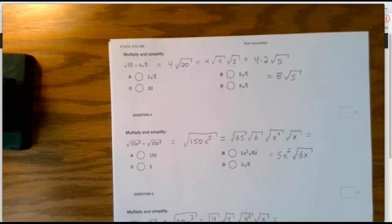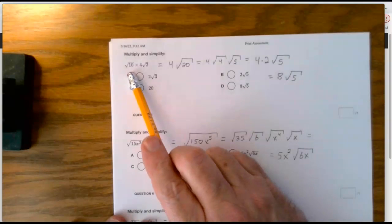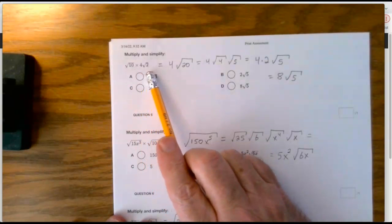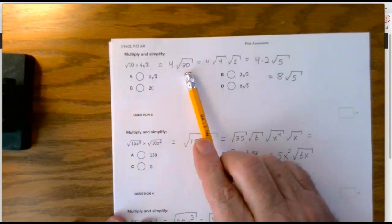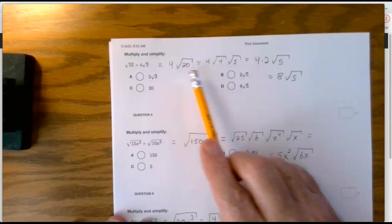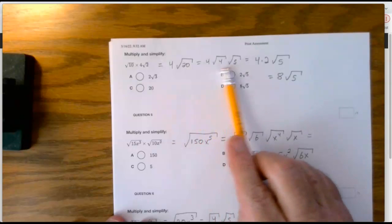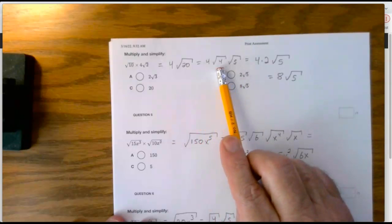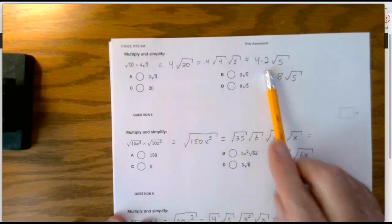Next: square root of 10 times the square root of 2 gives the square root of 20 inside. 20 is 4 times 5, and 4 is a perfect square — its square root is 2. Take the 2 outside and leave the square root of 5 inside.